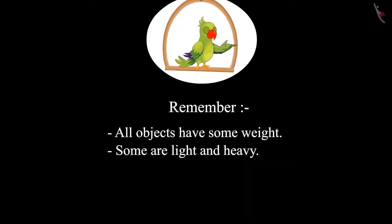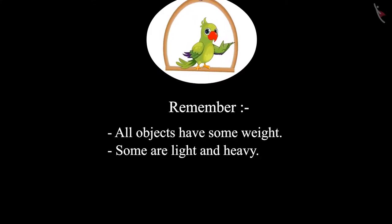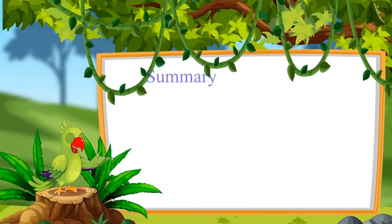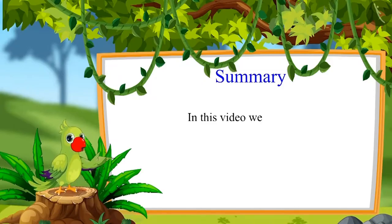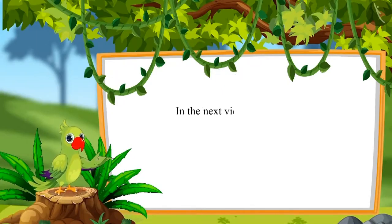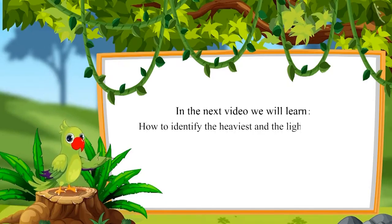This means all objects have some weight — some are light and some are heavy. So children, that was all for today. In this video, we learned to identify heavy and light objects. In the next video, we will learn how to identify the heaviest and the lightest objects. Till then, bye children.